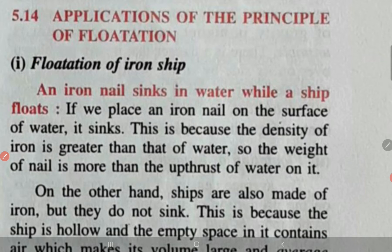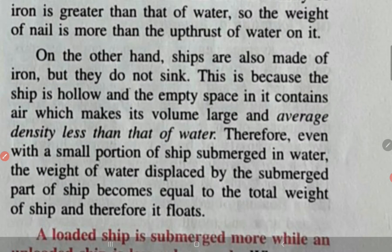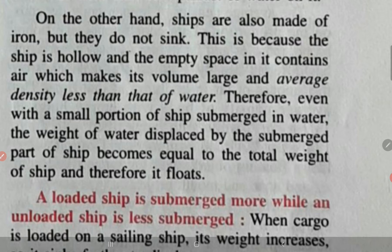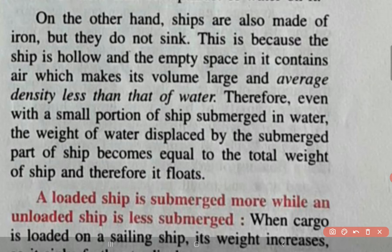As you all know, an iron ship is also made up of iron, and it does not sink. The reason again involves two factors: density and upthrust. Here, we do not have only the density of iron — we have the average density of iron and air, which is found to be less than that of water.